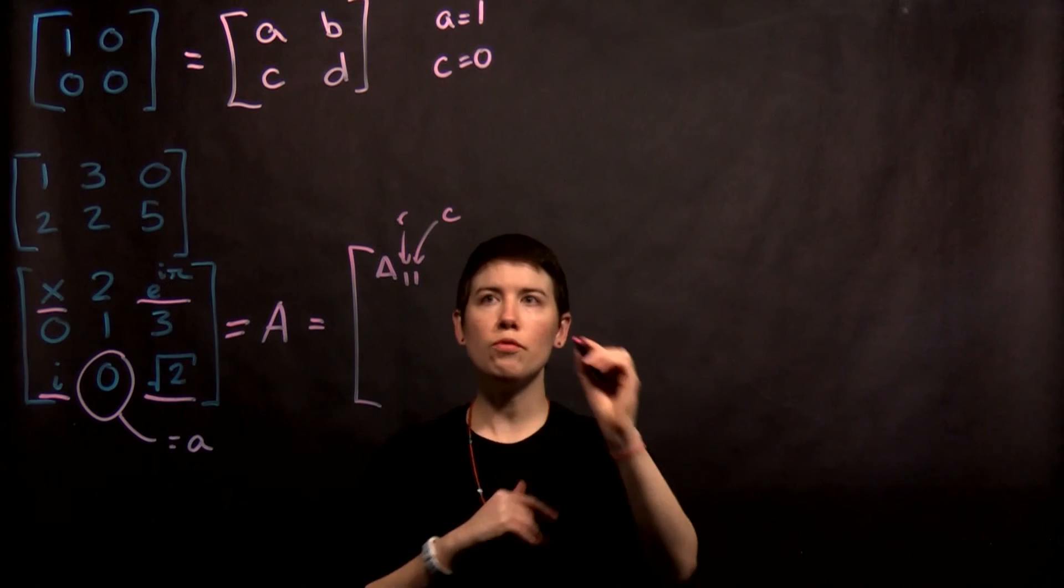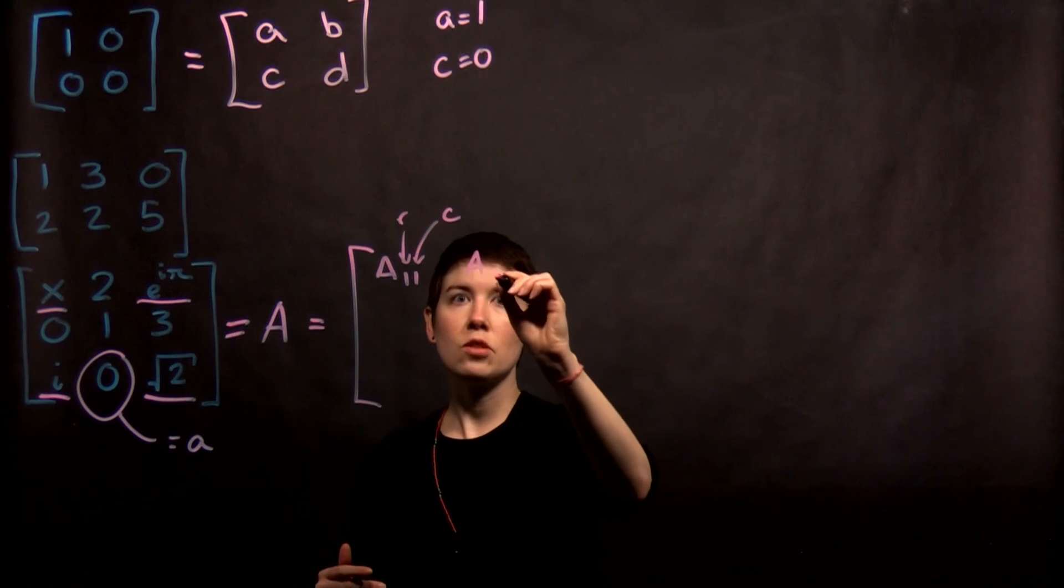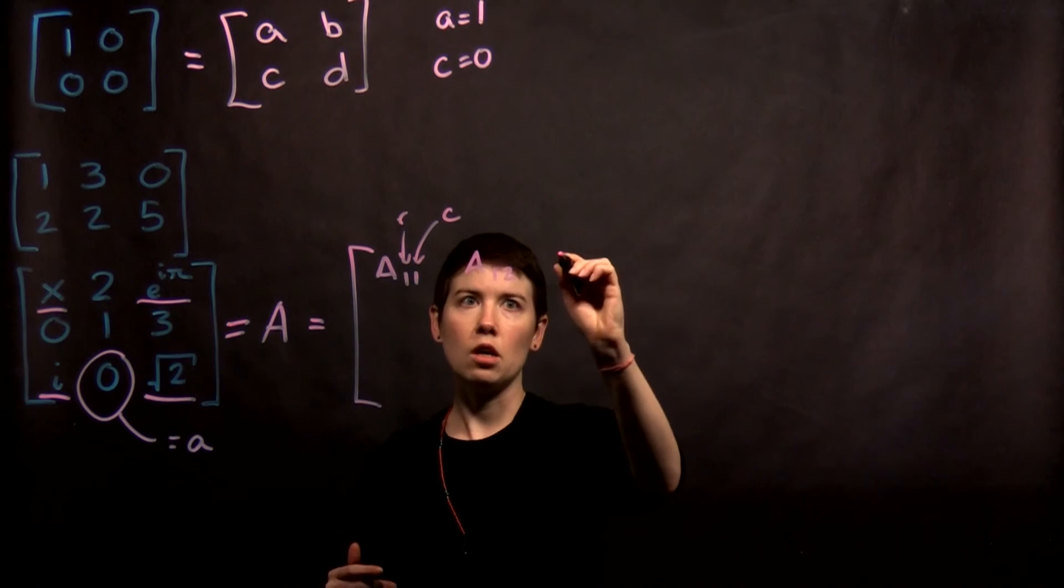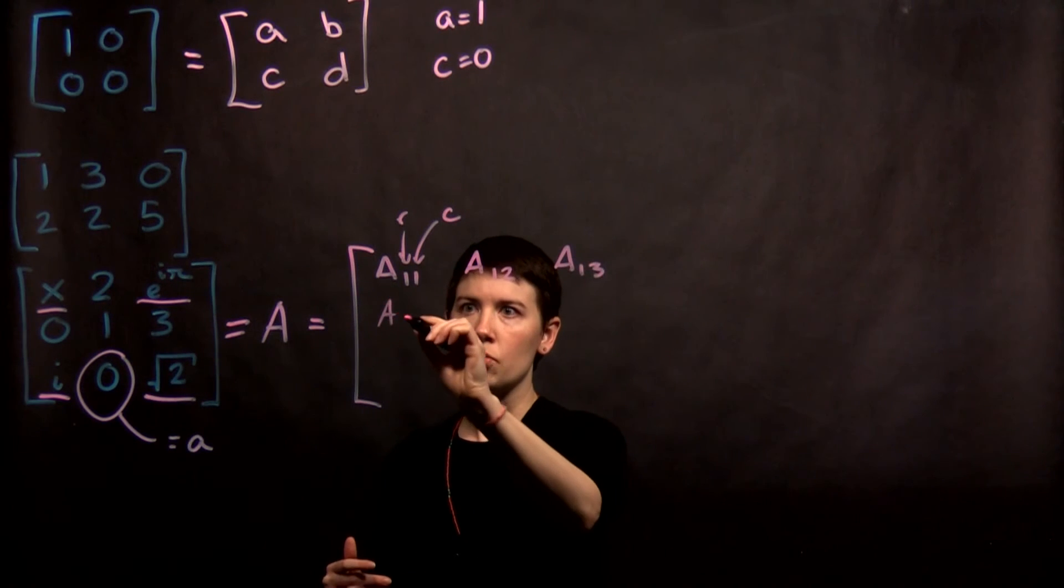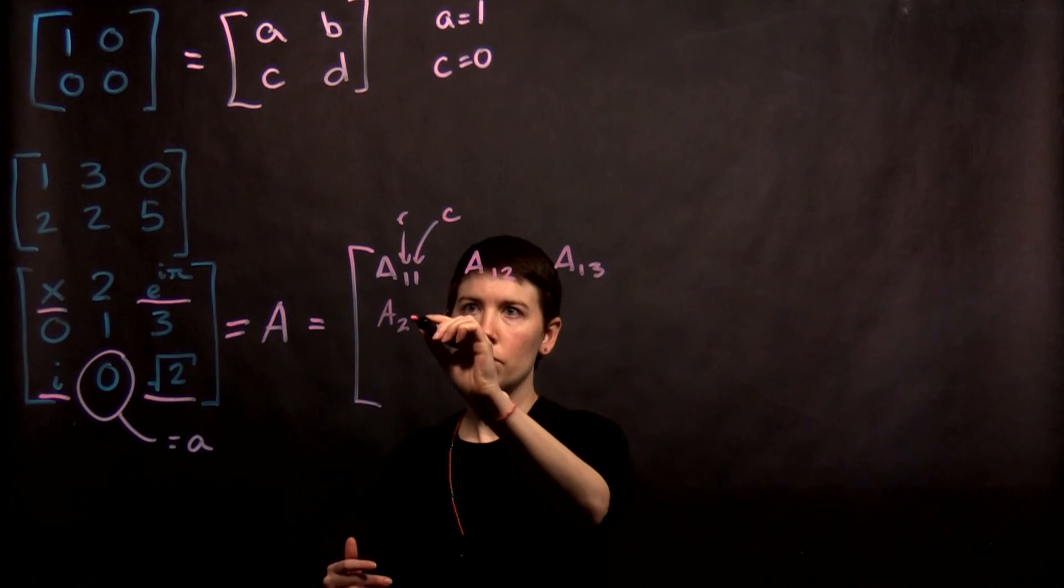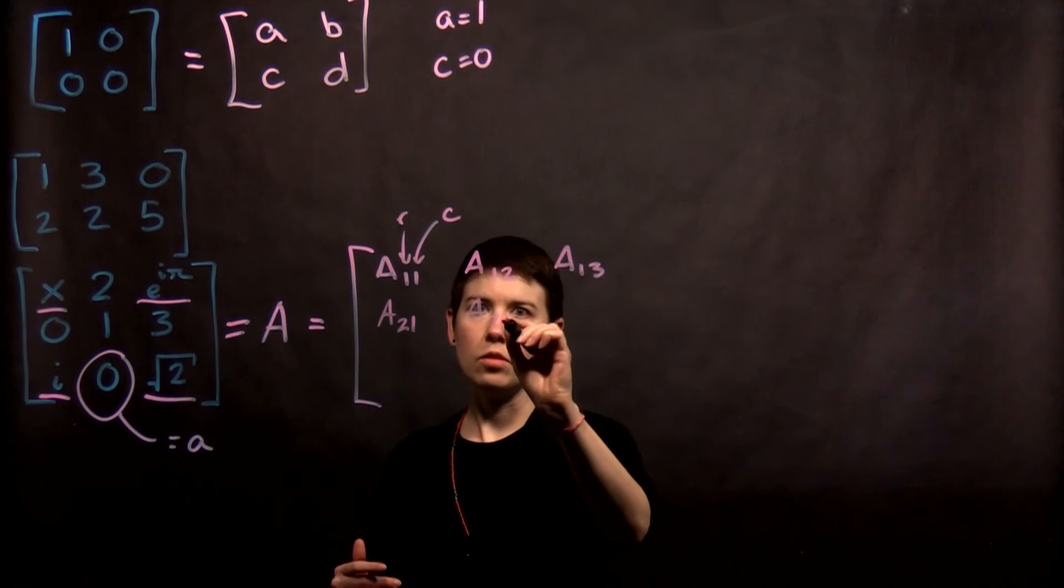So when we move over 1, that's then going to still be the first row, second column. First row, third column. The next one, second row, first column, and so on.